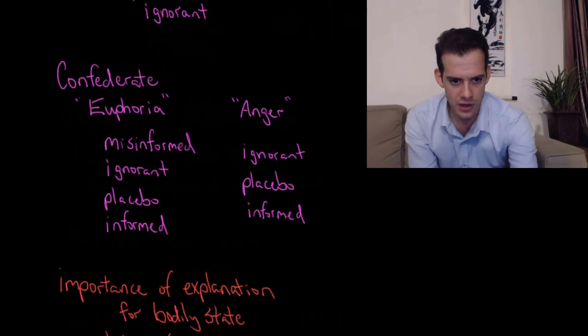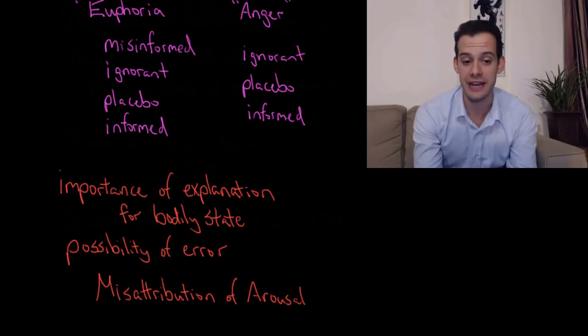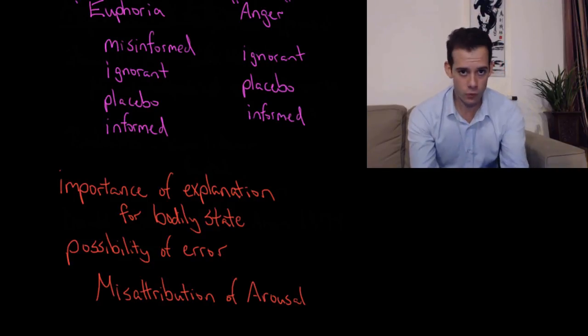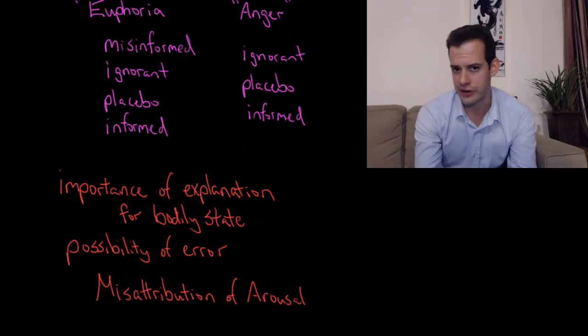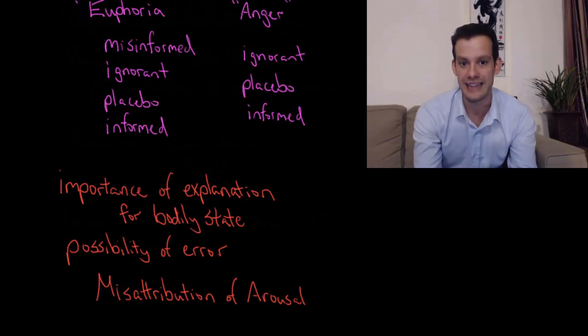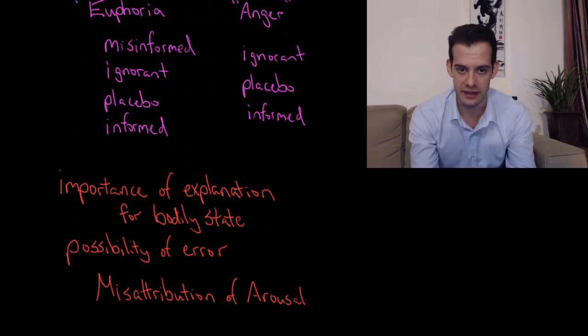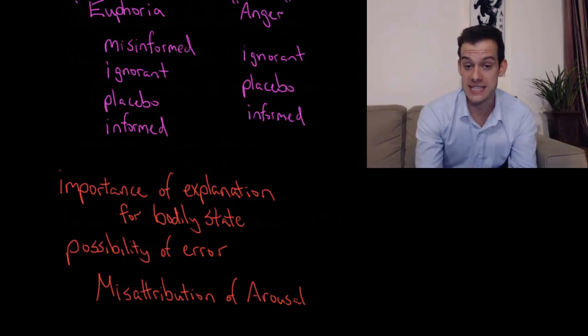So what does all of this really mean? Well, the idea is that it emphasizes the importance of our explanation for our bodily state. We have some physiological arousal and we want to know where is this coming from. If we don't know where it's coming from, we might think we're experiencing some emotional state. But if we know it's coming from an injection of adrenaline, for instance, then we say 'okay I have this feeling in my body but it's coming from the adrenaline, it's not an emotion.' This raises the possibility that we can make mistakes, as these participants did—that we can misinterpret things. This brings us to what's called misattribution of arousal, and this is something that we'll look at in the next video.